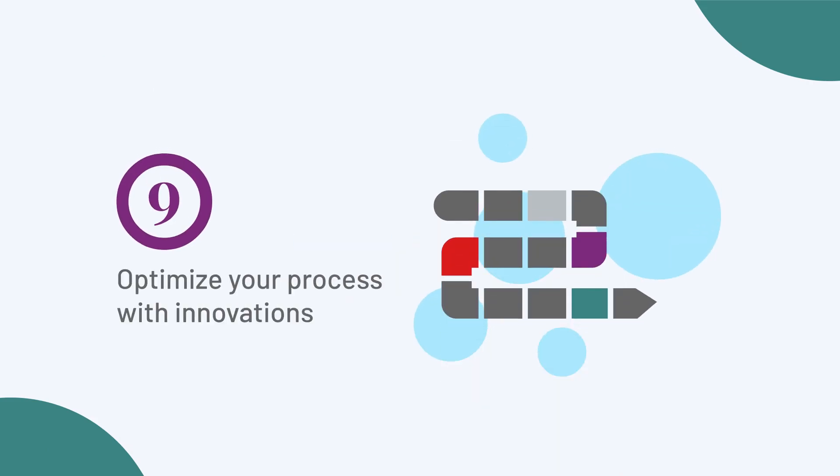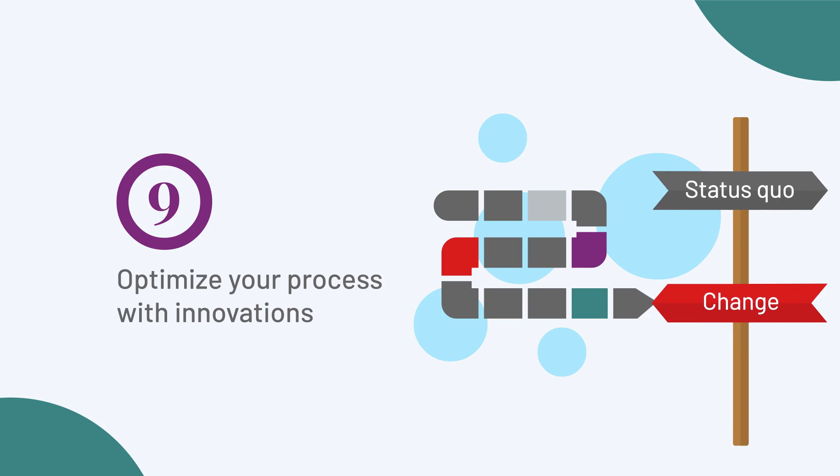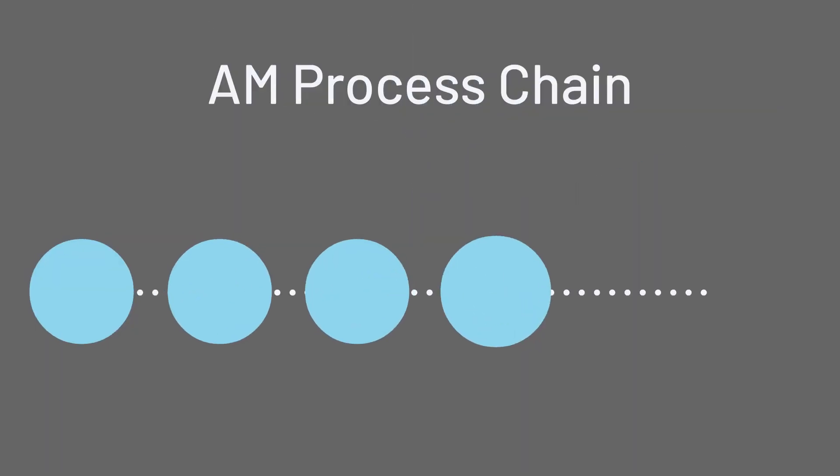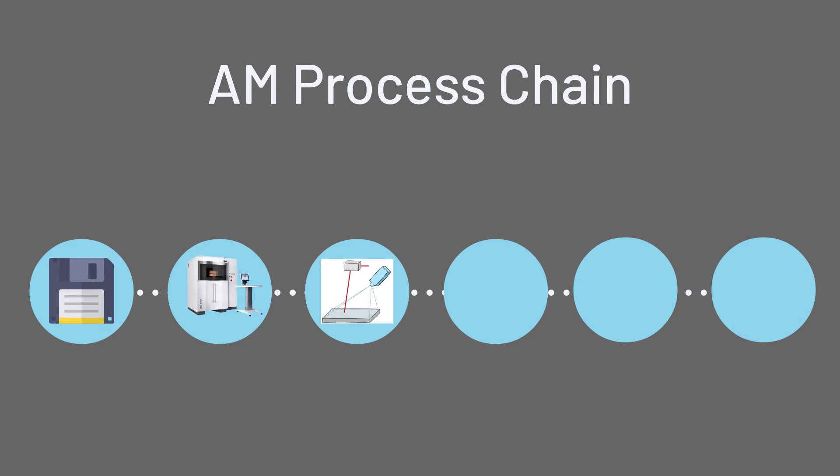Number nine: optimize your process with innovations. Challenge the status quo to do better. Focus on topics throughout the entire AM process chain from data preparation, machine setup, and the build process itself including process control to decommissioning and post-processing of parts.